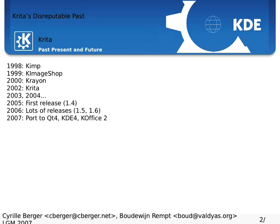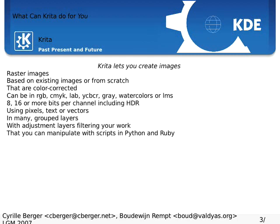So let's see what Krita can do right now. Here is a list of what Krita can do. In fact it can do a lot more. We can't cover all the aspects in this presentation. So here is the short list. Obviously Krita can manipulate raster images — the whole point of the stuff. And you can take existing images, modify them, adjust the contrast, etc.